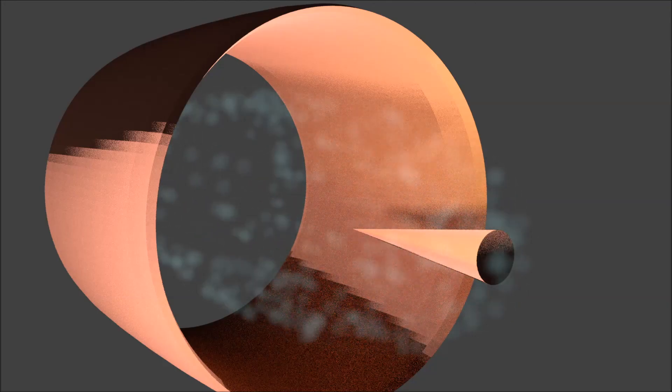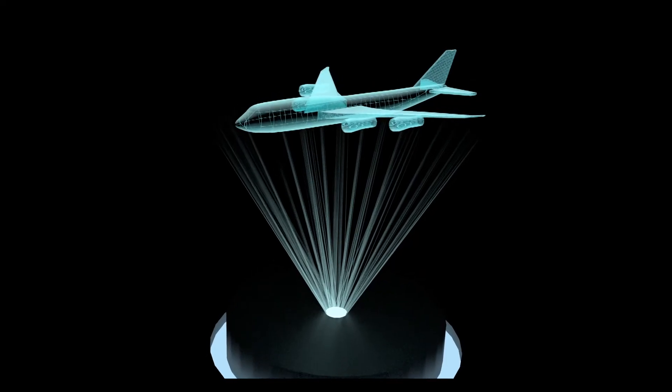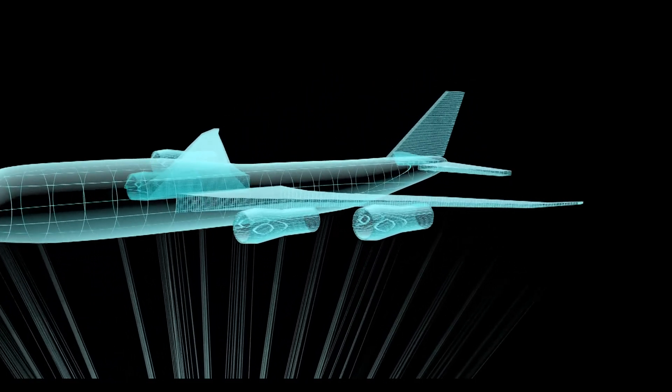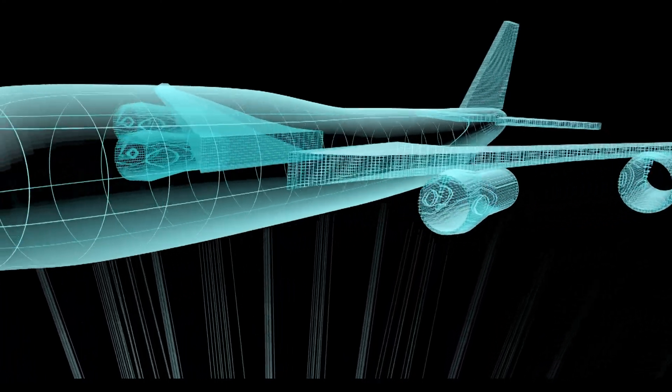EHD thrusters' only emission is ozone, which is important in the Earth's UV shielding process. EHD thrusters are also very quiet compared to jet engines, which would allow for planes to fly at lower altitudes without obscene noise pollution.